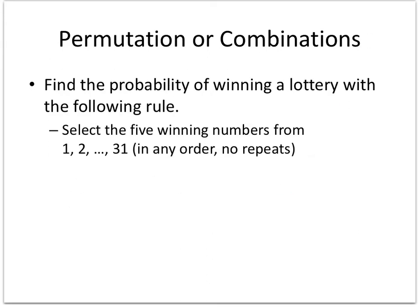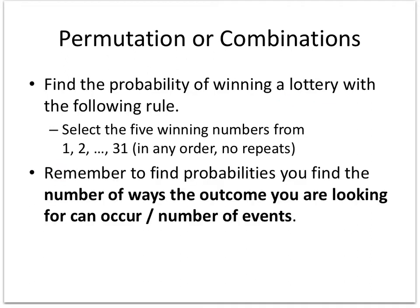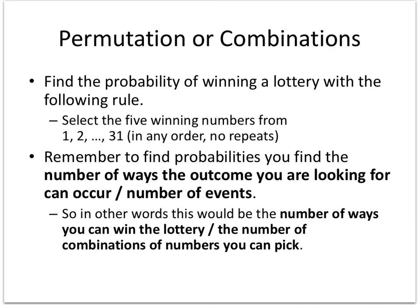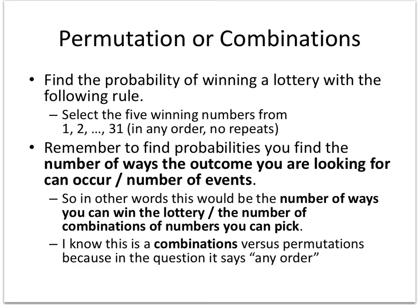To find the probability of winning a lottery: select five winning numbers from 1 through 31 in any order. To find the probability, divide the number of ways the desired outcome can occur by the total number of possible outcomes — the number of ways you can win divided by the number of possible combinations. This is a combination because the order the balls pop out does not matter; only getting the correct numbers matters.